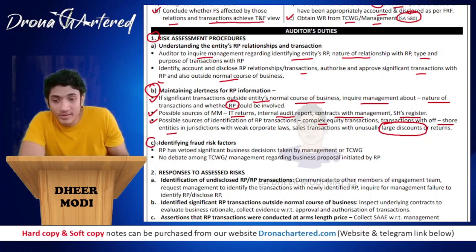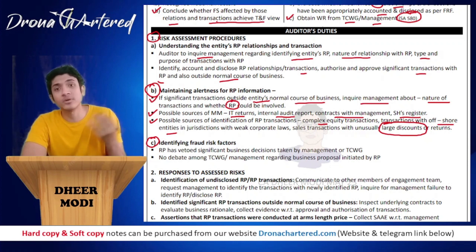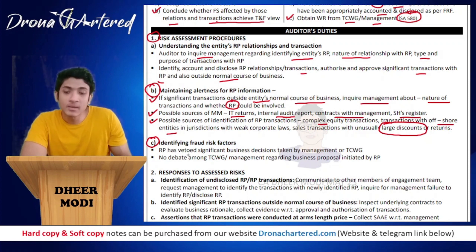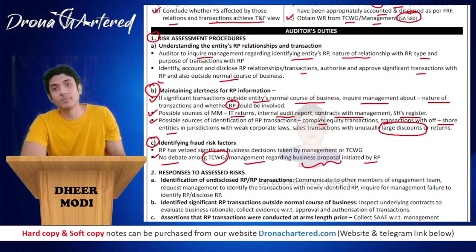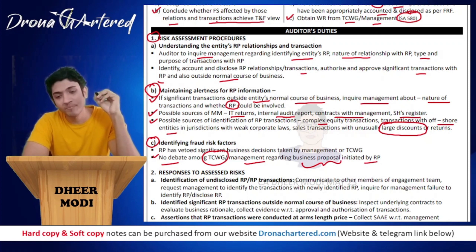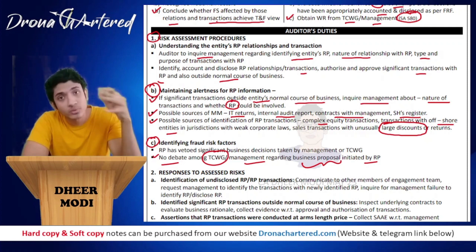Next, identify fraud risk factors related to related parties. Red flags include: the related party has vetoed or supported significant business decisions taken by management or TCWG, and there is no debate among TCWG and management regarding business proposals initiated by the related party — meaning TCWG and management straightaway accept any proposal from the related party without scrutiny.